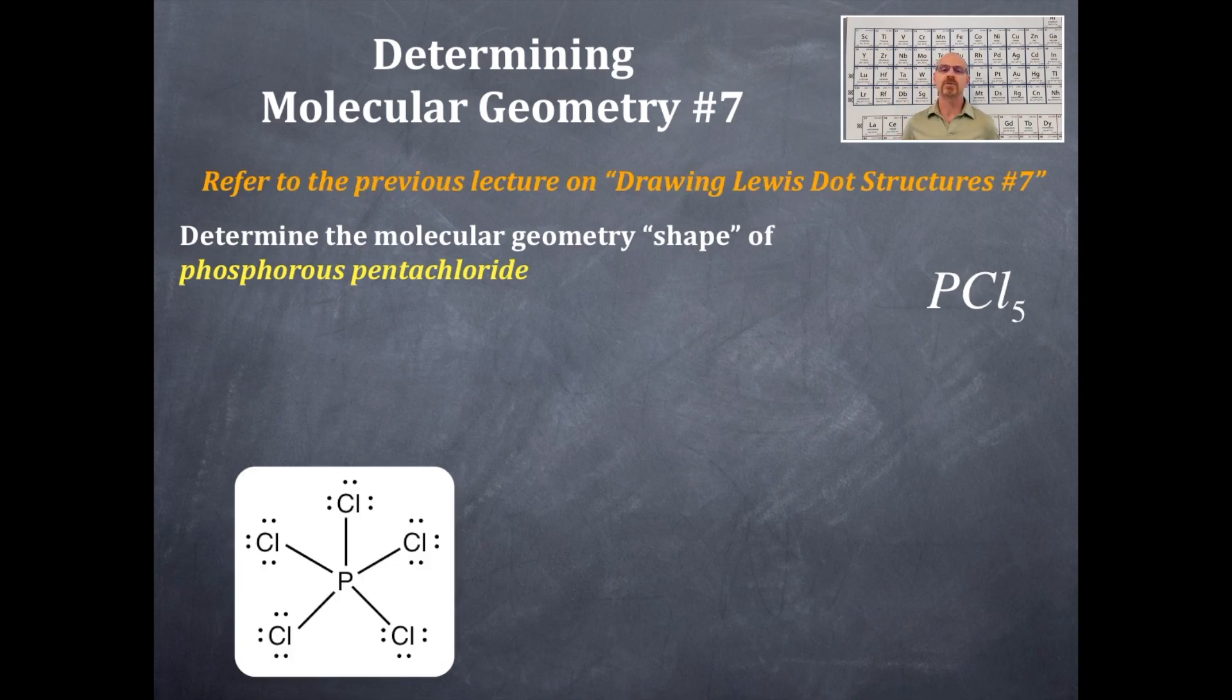From that we should be able to get the Lewis dot structure. I'm going to refresh you to go look at another video which we've already made, drawing Lewis dot structures number seven. We did phosphorus pentachloride, and you should see in your lower screen the Lewis dot structure for phosphorus pentachloride.